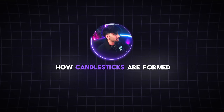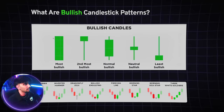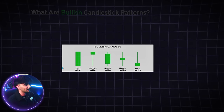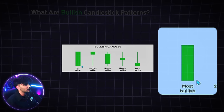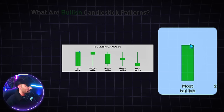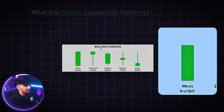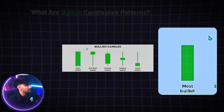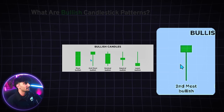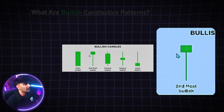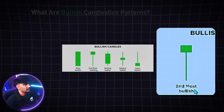Now that we understand how candlesticks are formed, let's look at some bullish and bearish candlestick patterns. Here we have bullish candlesticks going from the most bullish to the least bullish. The most bullish candlestick opens at the bottom and closes at the top — it's a full body candle with no wicks, meaning there were no sellers. This is completely bullish, and if you see this on the chart it usually means bulls have the majority of control. The second most bullish is the hammer stick candle, which is also my favorite candlestick to enter on a long position.